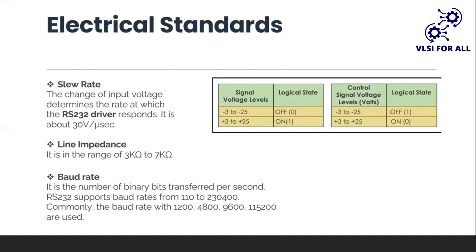There are some electrical standards for the RS-232 communication protocol. The voltage levels in this protocol range from minus 25 volts to plus 25 volts. The signal voltage between plus 3 volts to plus 25 volts represents logic one, and the signal voltage between minus 3 volts to minus 25 volts represents logic zero. The control voltage signals use negative logic.